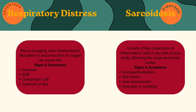Finally, we have sarcoidosis, which is the growth of tiny collections of inflammatory cells in any part of your body, affecting the lungs and the lymph nodes. Signs and symptoms include increased salivation, skin lesions, liver involvement, and joint pain or swelling.